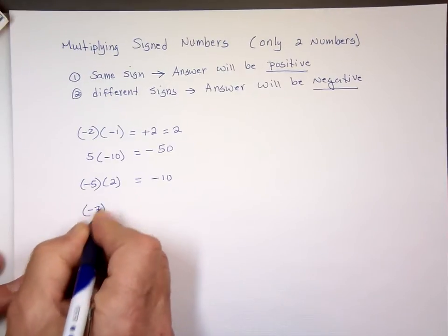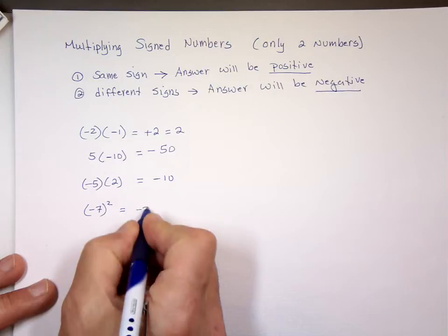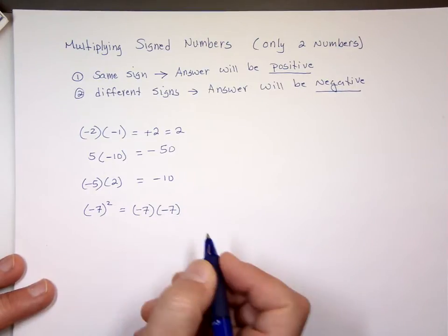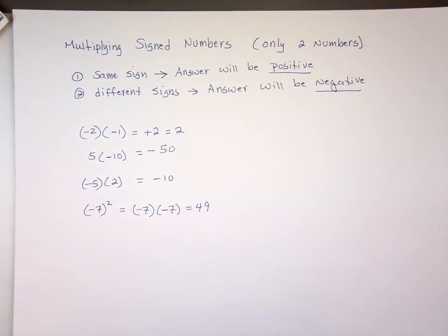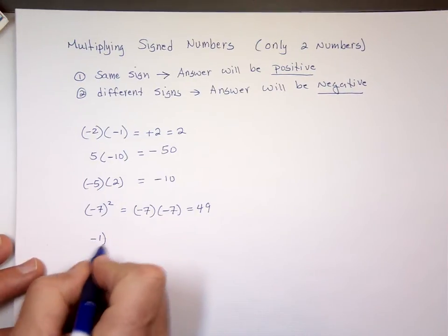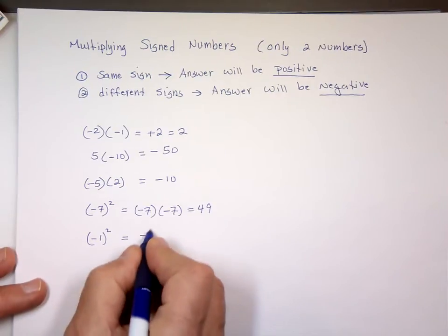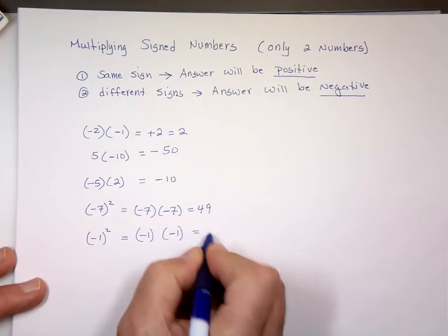What about this one? Negative seven squared. What does that mean? Negative seven times a negative seven. Are they the same sign? Yes. The result is positive forty-nine. What's negative one squared? Negative one times a negative one — same sign — the result is positive one.